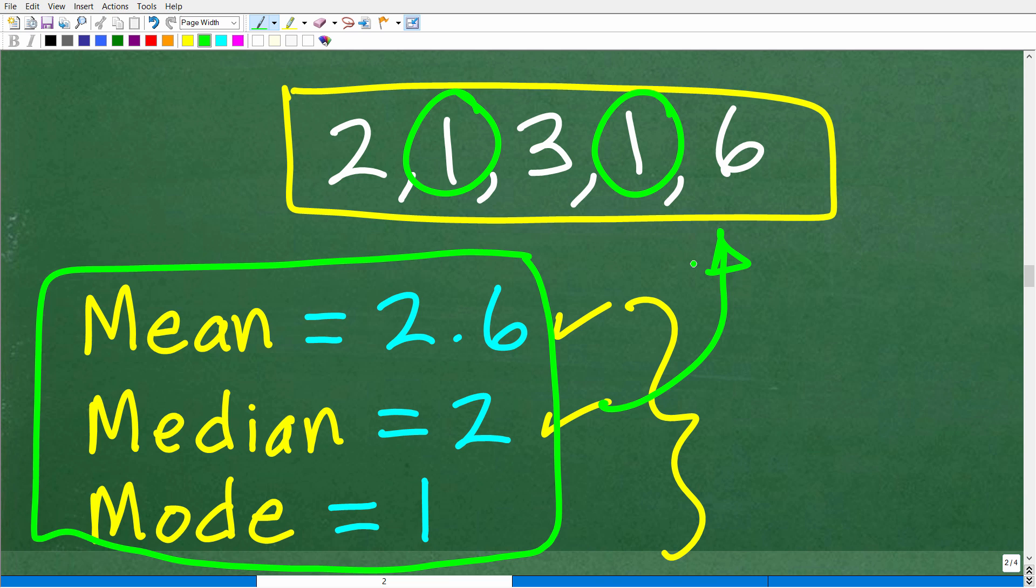There's another one I'm skipping called the range. But if you understand those, you're pretty good. I bring up these three words because they all start with M. Oftentimes, people confuse one with the other, especially the mean and median.